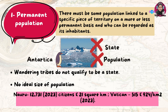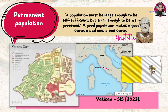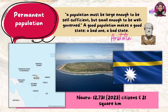That is why Antarctica is not considered a state — it does not have a population. The same applies to wandering tribes, who do not qualify as a state because the people move from one place to another. There is no ideal size of population. According to Aristotle, a population must be large enough to be self-sufficient but small enough to be well governed. Take Nauru for example — in 2023 it has only 12,731 citizens.